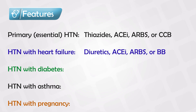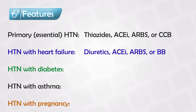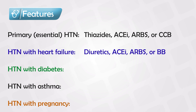Beta blockers are only used if the patient has compensated heart failure. In decompensated heart failure, they can be used in certain scenarios with high caution, but they are absolutely contraindicated if the patient has cardiogenic shock.